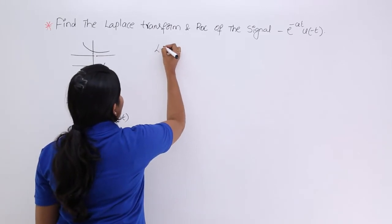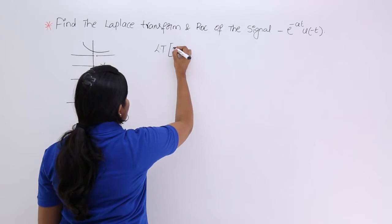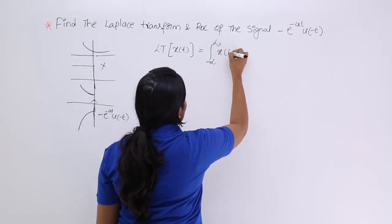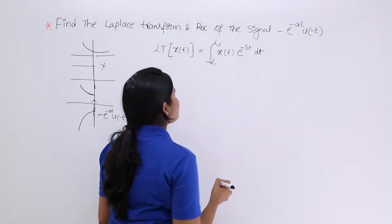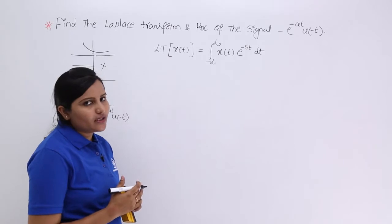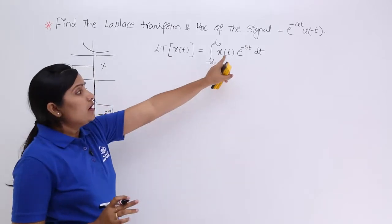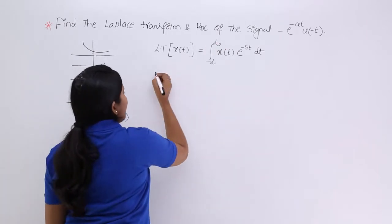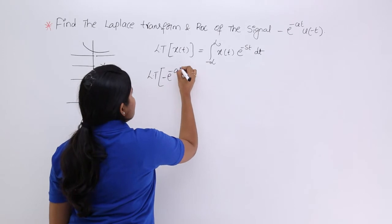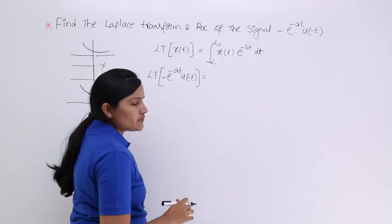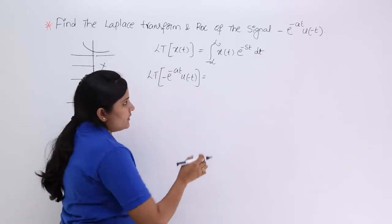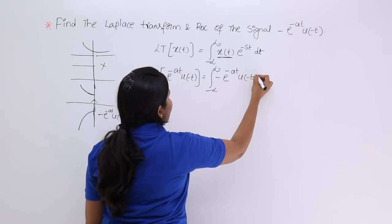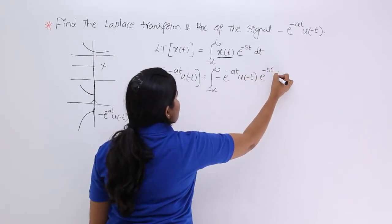To calculate the Laplace transform, I start from the fundamental equation: the Laplace transform of x(t) is the integral from minus infinity to infinity of x(t) times e power minus st dt. I substitute my signal, minus e power minus at, u of minus t, into this equation — replacing x(t) while keeping the e power minus st dt term.